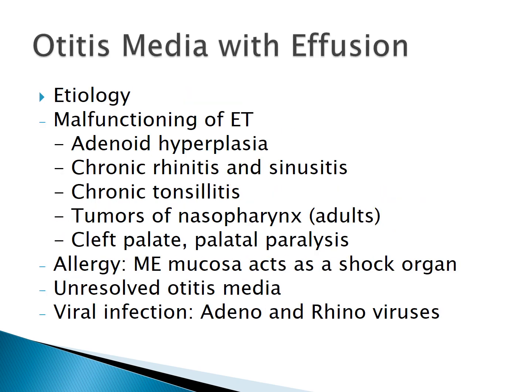Malfunctioning of the eustachian tube can be because of adenoid hyperplasia, chronic rhinitis and sinusitis, chronic tonsillitis, or in adults especially, tumours of the nasopharynx. It is also seen in cleft palate and palatal paralysis, in which there is poor tone of the tensor veli palatini muscle.